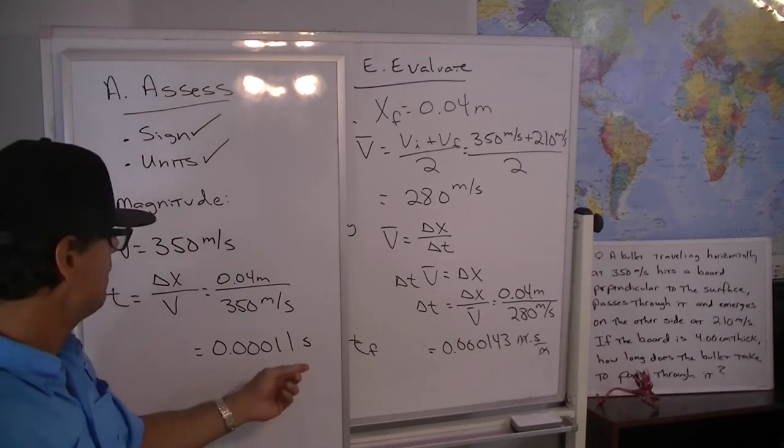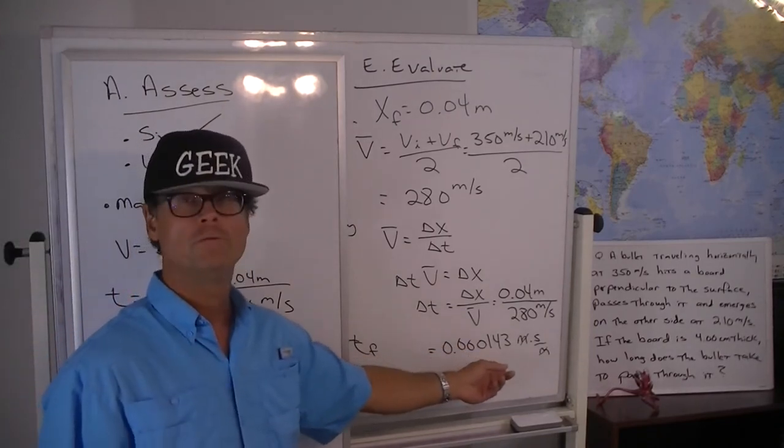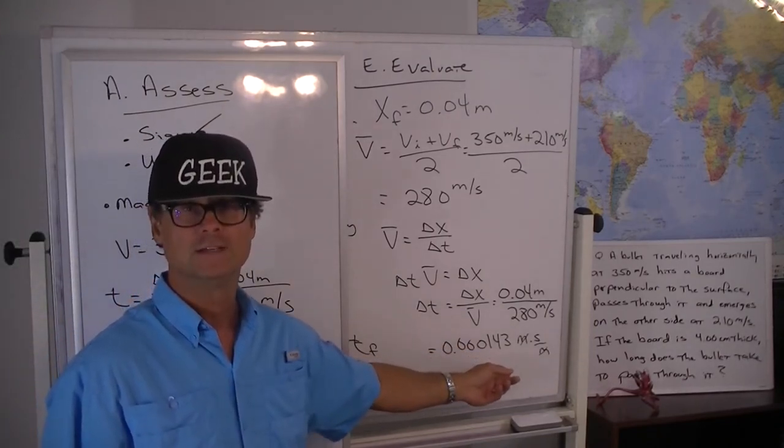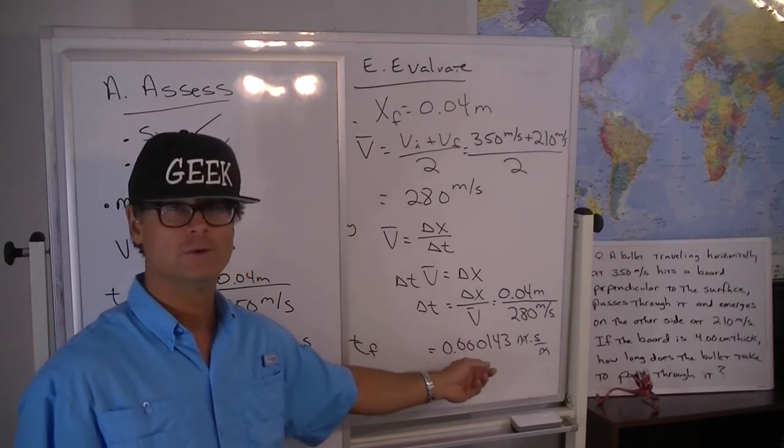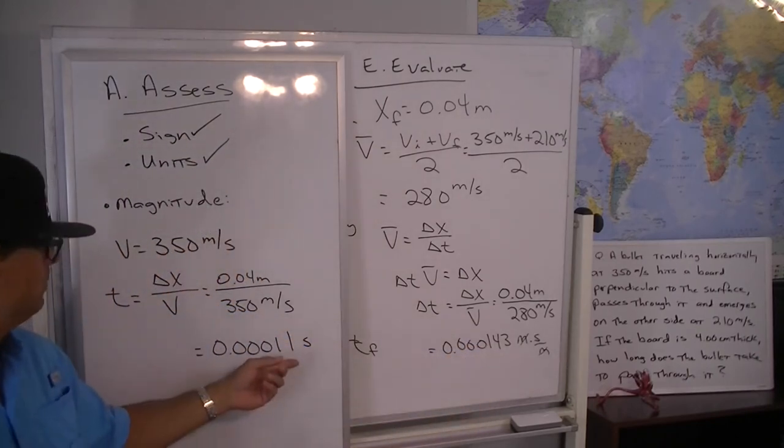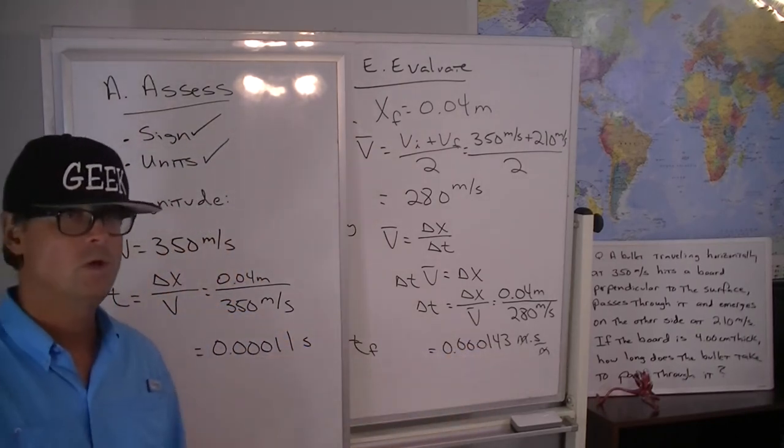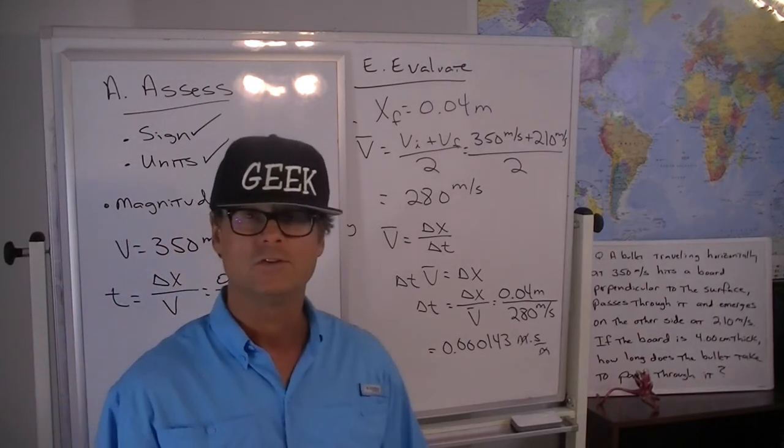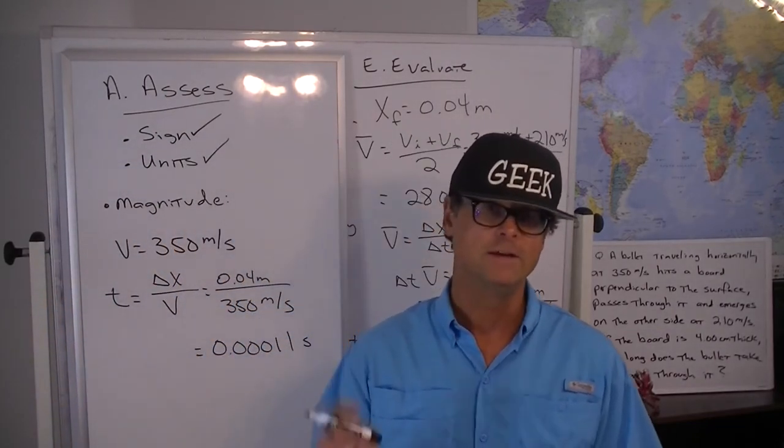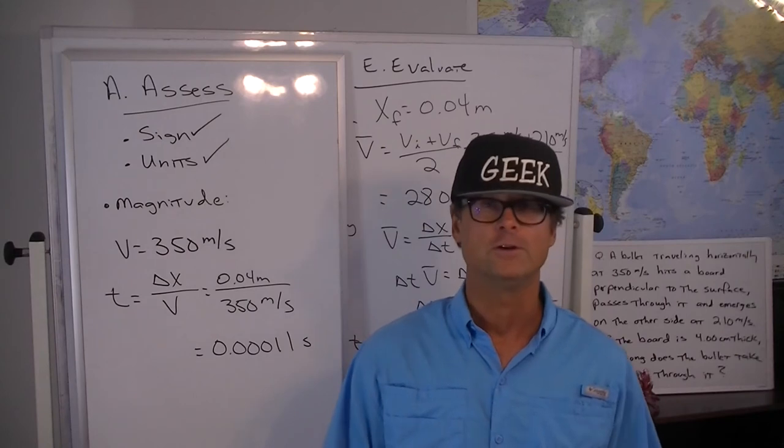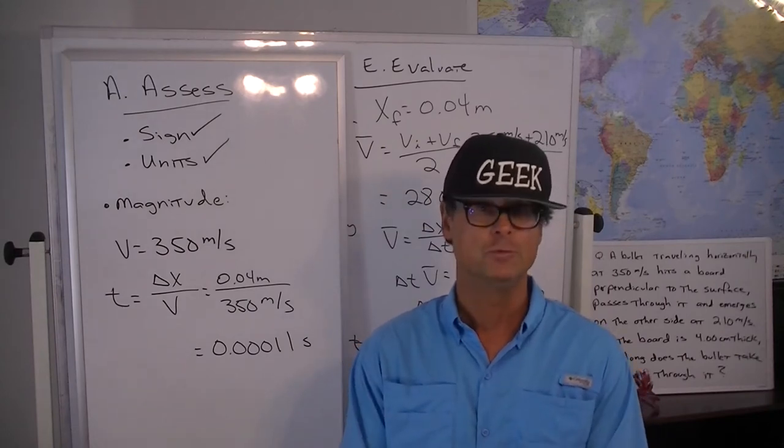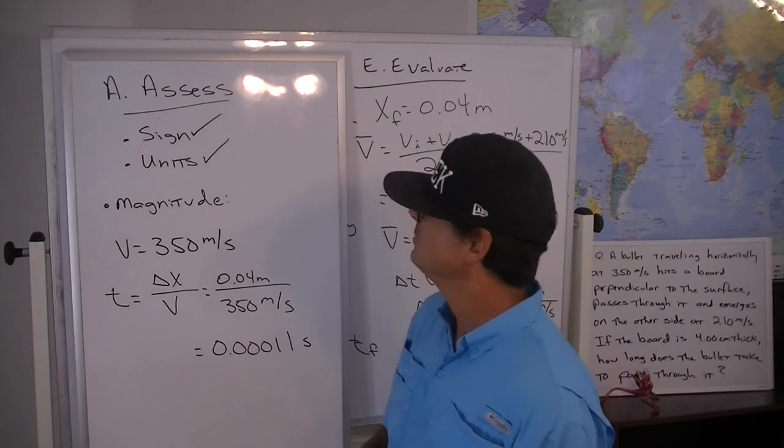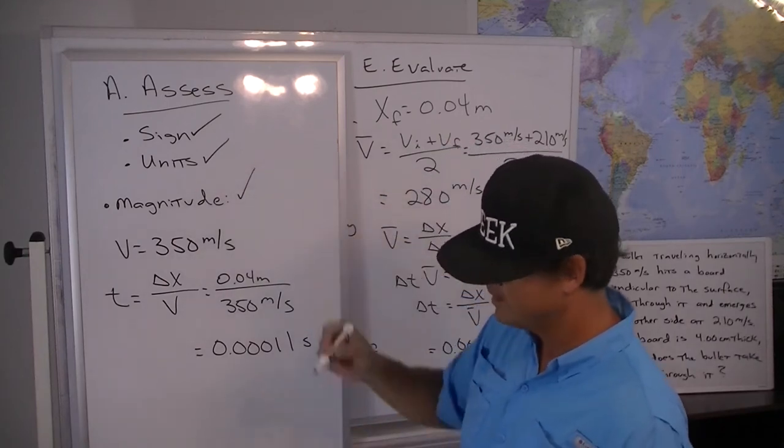So we ended up with 0.000143 seconds. And so it would have been 0.00011. So as we expected our time with the slowing down is a smidge longer than our time we obtain if we assume that it didn't slow down at all. So that makes our magnitude assessment also check out in line with our expectations.